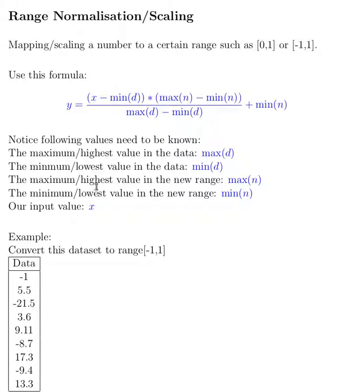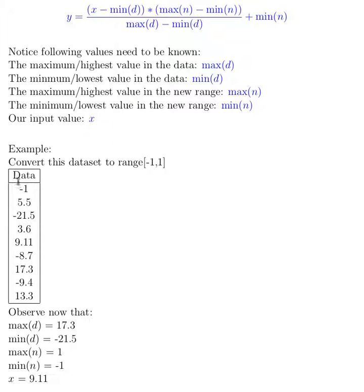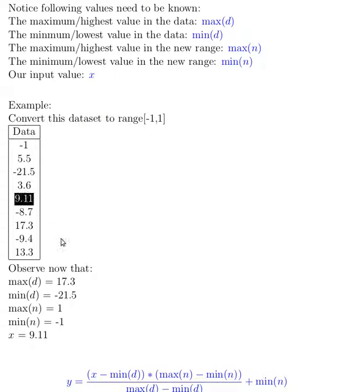So last time we had this dataset and we had the range between -1 and 1, and we chose 9.11 to actually compute the corresponding value or the new value within the range -1 and 1.